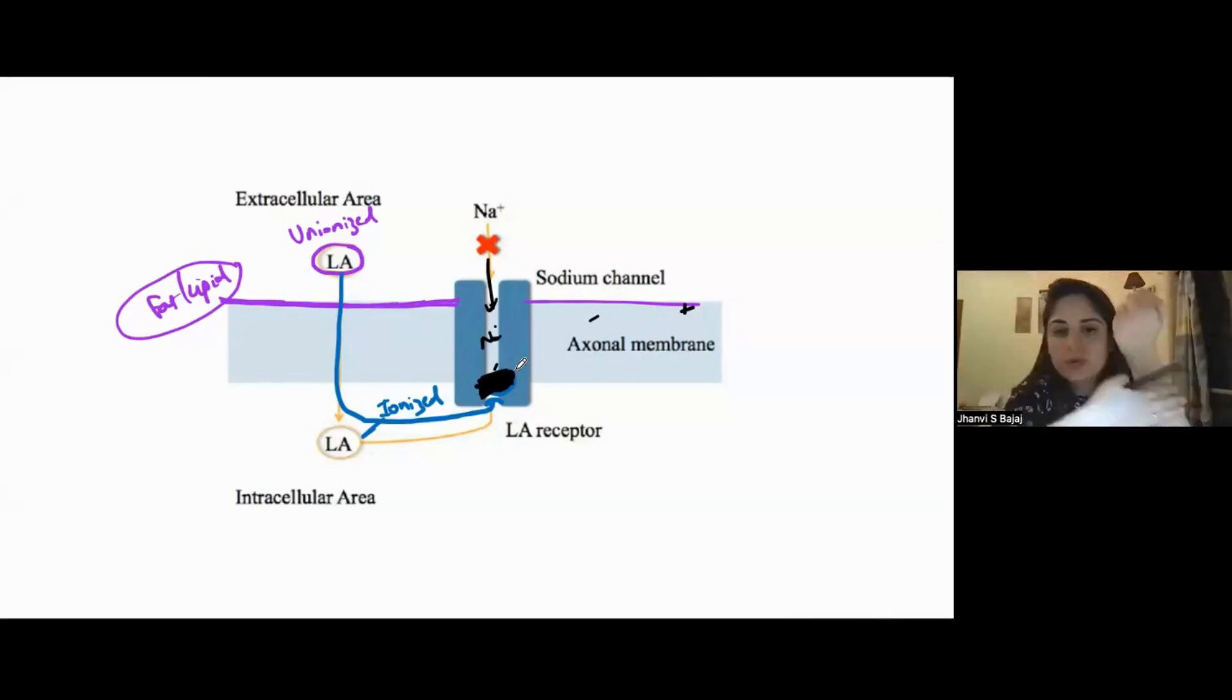the sodium channel blockade causes numbness in the hand. Okay. So, now, you will not feel my pinch. You will not feel me hitting you because there is a blockade of the sodium channels and the sensation is not carried out. So, everyone understood this. How does local anesthetic act? It causes sodium channel blockade.